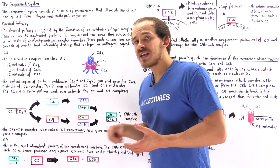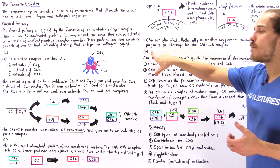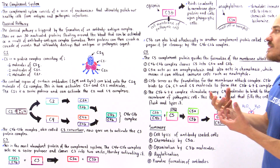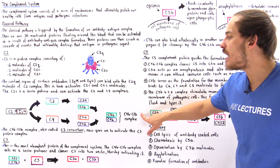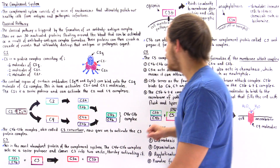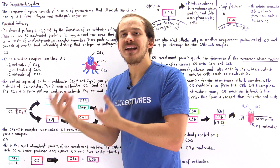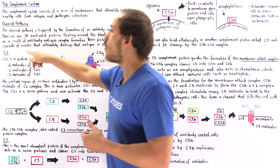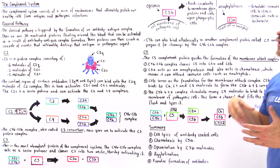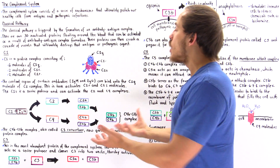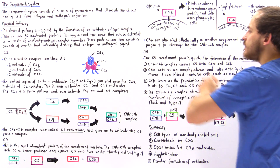The other function of C3B is to bind onto an allosteric site found on the C5 protein. By binding to C5, it creates a conformational change and prepares it for cleavage by the C4B-C2B complex. So remember, this complex doesn't only activate C3 — it also activates C5. We have this very complex mechanism where many different proteins activate other proteins, which is why we call this a cascade of events. In fact, the complement system is also sometimes known as the complement cascade system.